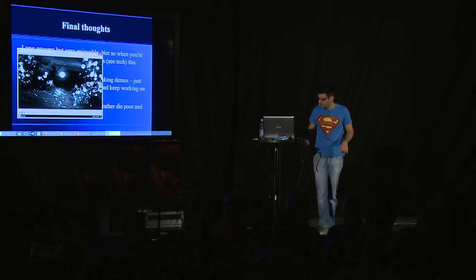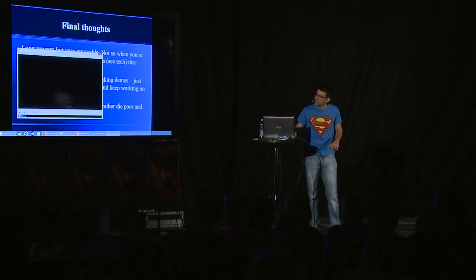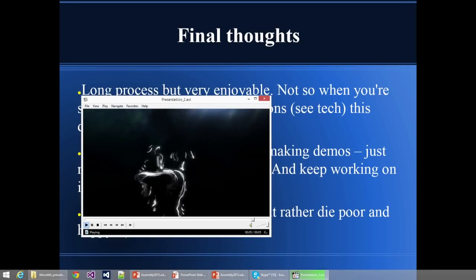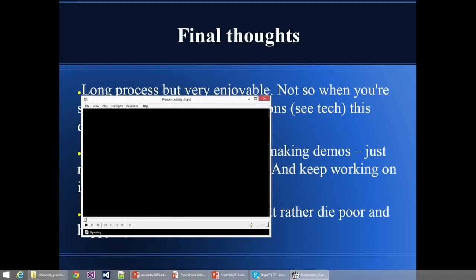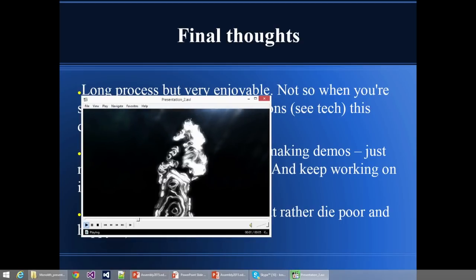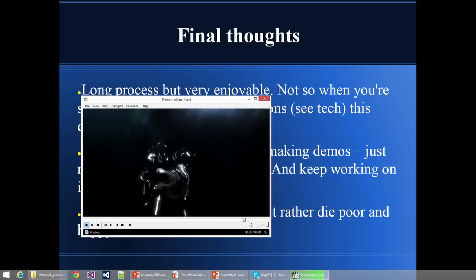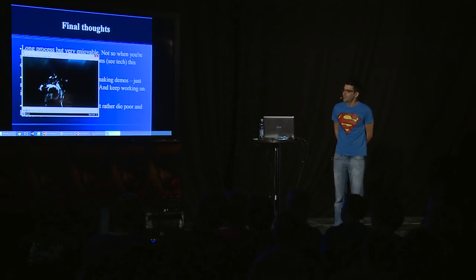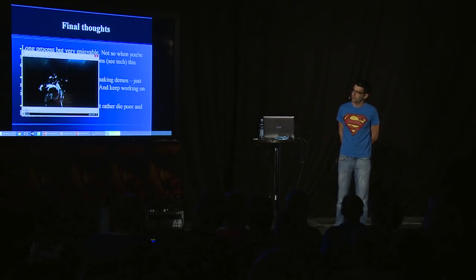I talked about the edge tracing, so I have a small clip — this is without color, a very early version of what it would look like. It shows a woman actually holding a real baby. You can see how the isocontours fall on the right places to make it look like edges — you can see the hands. It's a bit abstract, but it works quite well with the right animation and the right colors.